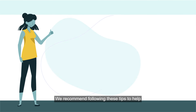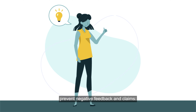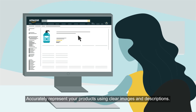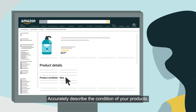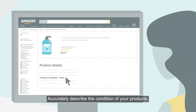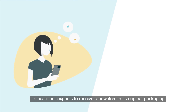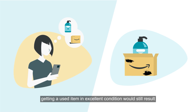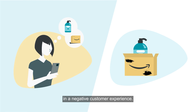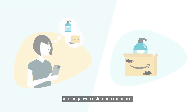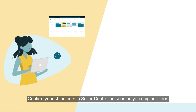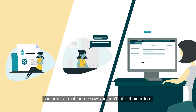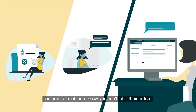We recommend following these tips to help prevent negative feedback and claims. Accurately represent your products using clear images and descriptions. Accurately describe the condition of your products — for example, if a customer expects to receive a new item in its original packaging, getting a used item in excellent condition would still result in a negative customer experience. Confirm your shipments in Seller Central as soon as you ship an order. Cancel out-of-stock orders and contact customers to let them know you can't fulfill their orders.